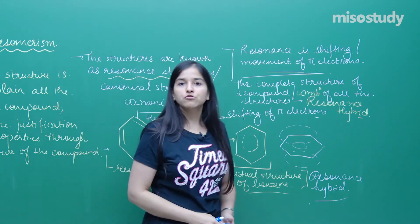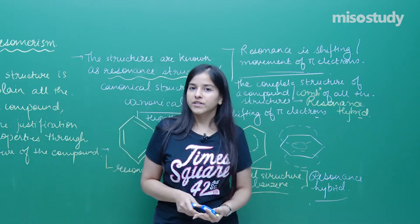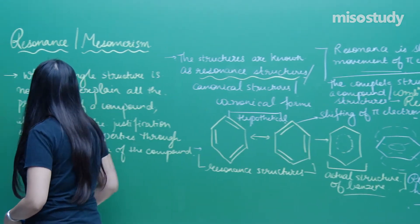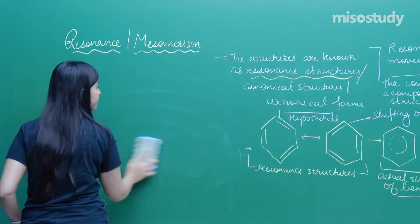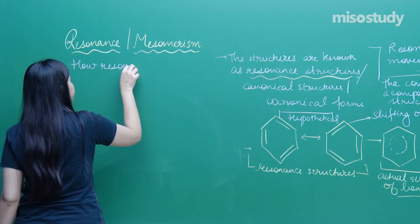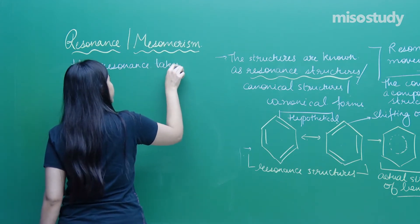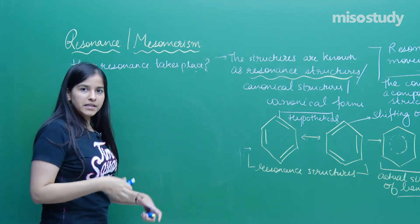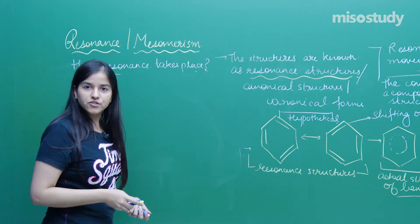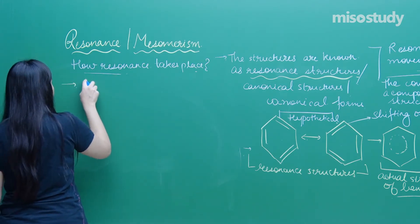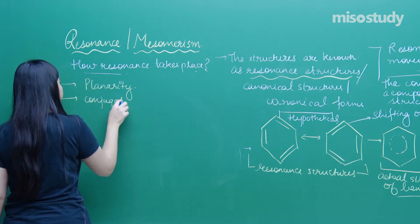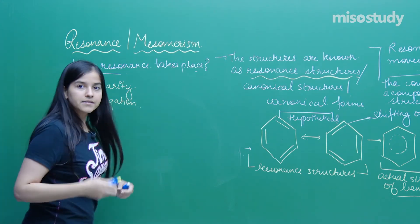Now we have understood resonance hybrid and resonance structures. What are the conditions for resonance? How does resonance take place? Resonance, unlike the physics concept, has certain conditions. First is planarity, second is conjugation, and third is a sub-part of conjugation — the specific areas in which resonance takes place.